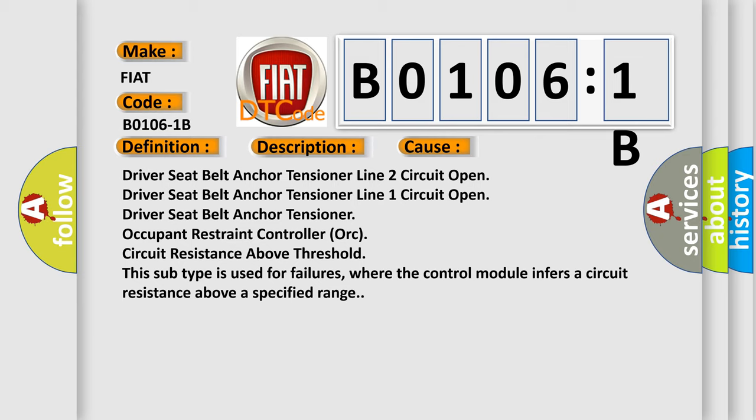Driver seat belt anchor tensioner line 2 circuit open, driver seat belt anchor tensioner line 1 circuit open, driver seat belt anchor tensioner occupant restraint controller AUK circuit resistance above threshold. This subtype is used for failures where the control module infers a circuit resistance above a specified range.